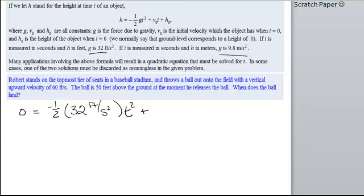And then we have v sub 0. v sub 0 is the initial velocity. Do we know the initial velocity? With a vertical upward velocity of 60 feet per second. So, that would be 60 feet per second. And that's multiplied by time. Plus your height. What's your height? Your initial height was 50 feet above the ground.